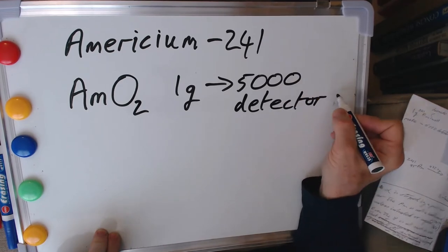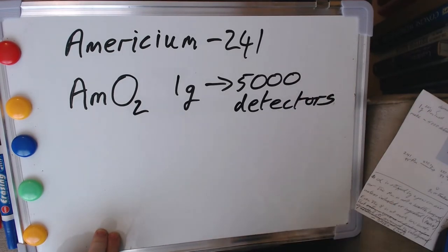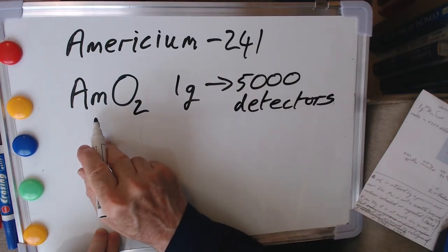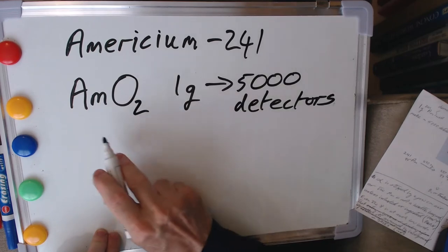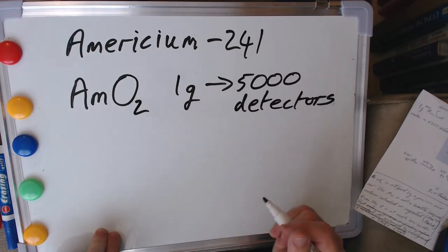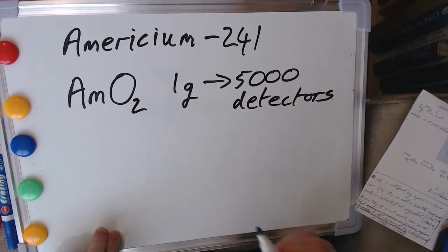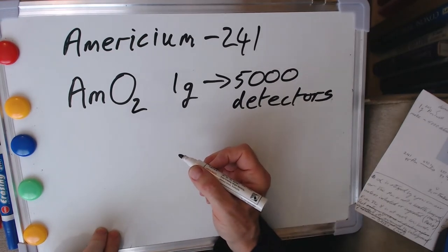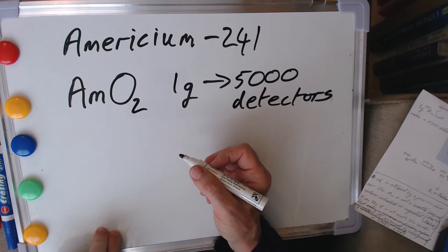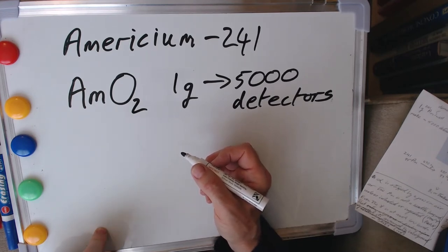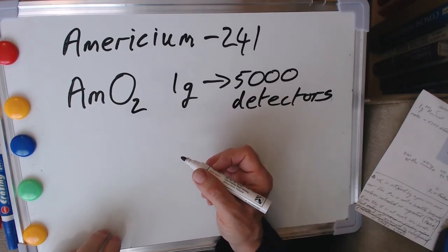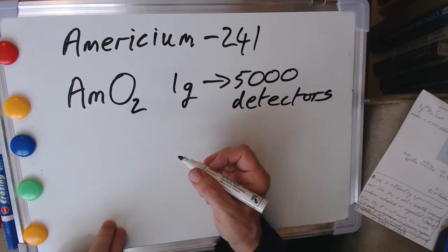And about one gram of this is enough to produce in the region of 5000 smoke detectors. So you can see that within any one smoke detector there is a very tiny amount of americium itself.